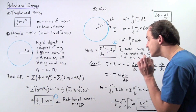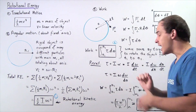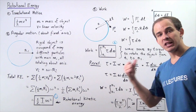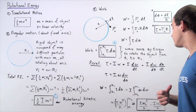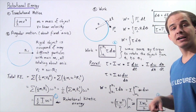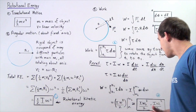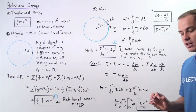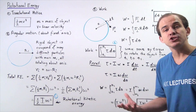We plug this torque expression into our work integral. The moment of inertia I is a constant, so we take it out. We get I multiplied by the integral from the initial angular velocity omega 1 to the final angular velocity omega 2 of omega d omega. Evaluating the integral gives omega squared over 2, so the work equals one-half I omega 2 squared minus one-half I omega 1 squared. This is equation 3, giving us the work done by the torque that increases the rotational kinetic energy of the object.